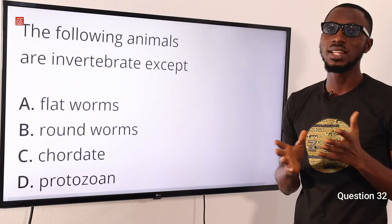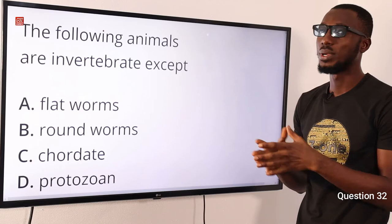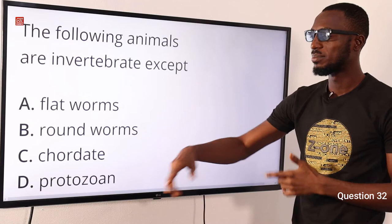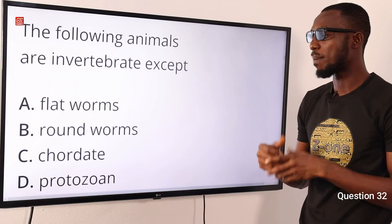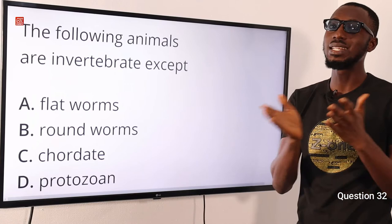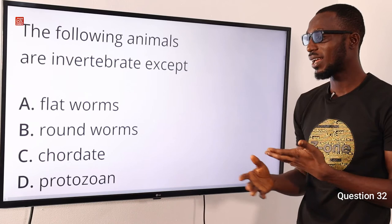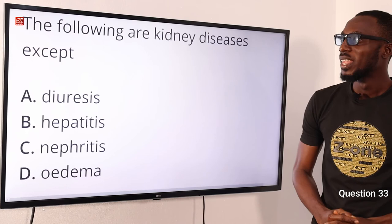Question 32: The following animals are invertebrates except what? In the kingdom Animalia, we have invertebrates and vertebrates. Flatworms belong to the phylum Platyhelminthes; roundworms to phylum Nematoda. Chordates belong to the vertebrates — animals with a backbone. Protozoa belongs to the kingdom Protista — examples include Paramecium and Amoeba. So the correct option is option C for Chordata.